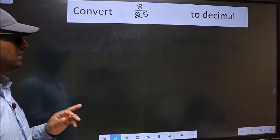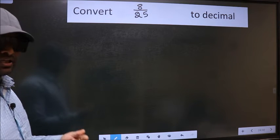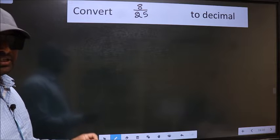Convert 8 by 25 to decimal. To convert to decimal, we should divide it.